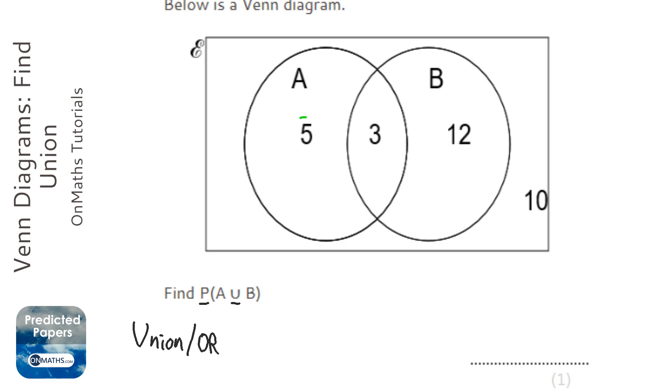So the numbers we're looking at are these ones here. So let's work out how many there are. Well, 5 plus 3 is 8, 8 plus 12 is 20. So there's 20 in total we're looking for.